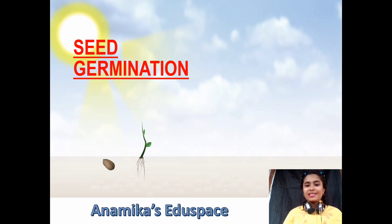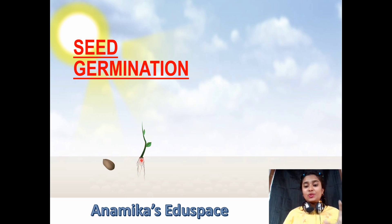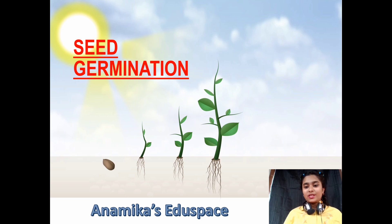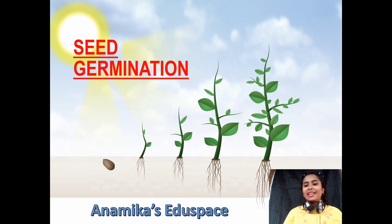The shoot grows towards the sun and gets sunlight. The root also comes out from the seed and fixes the plant to the ground. The plant gradually grows, develops branches, leaves, fruits, and flowers, and becomes a big plant. This is the process of seed germination in short.